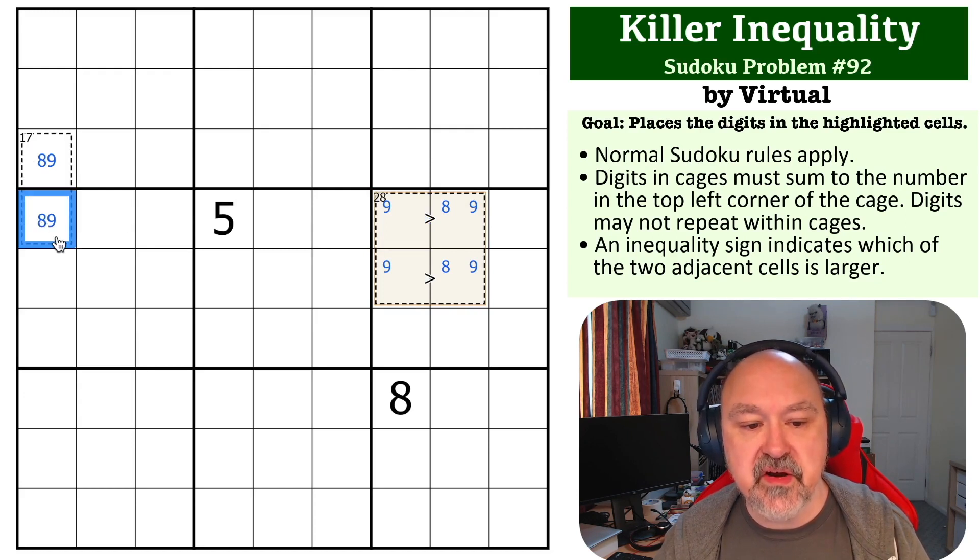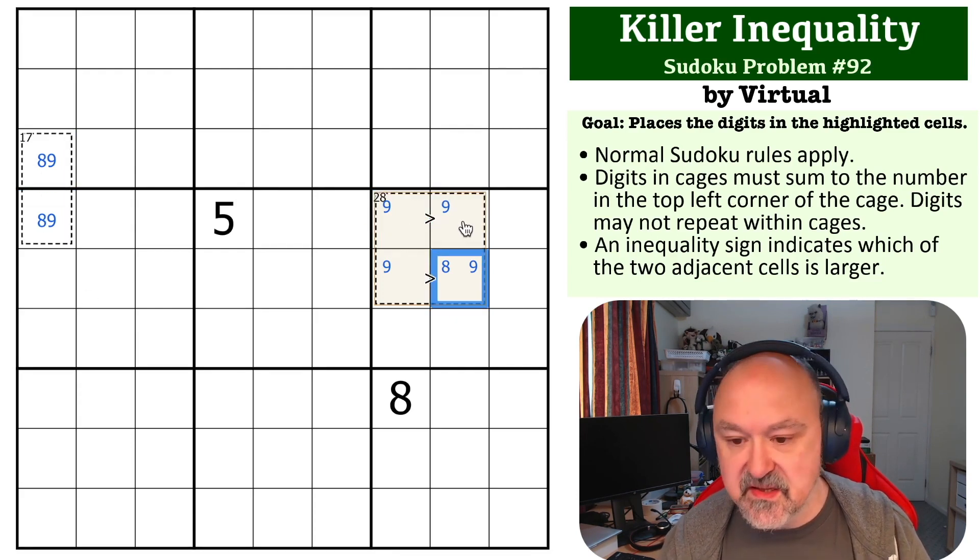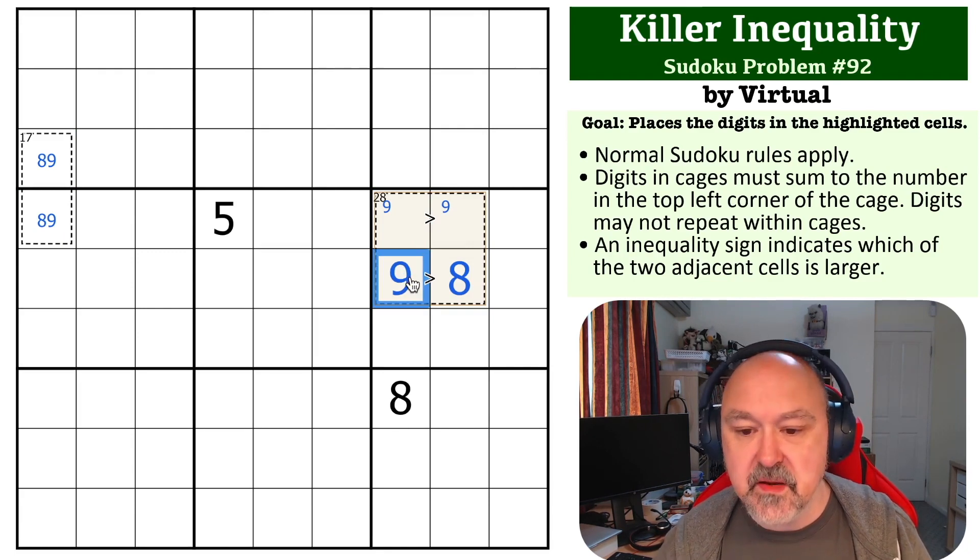The 9 pair generated over here from the 17 cage. If this was 8, 9, there would be nothing here. So this actually can't be the 8, this becomes the 8, and this becomes the 9.